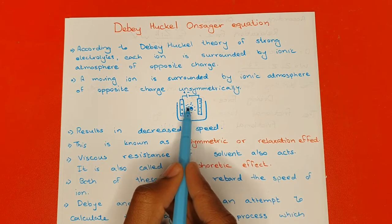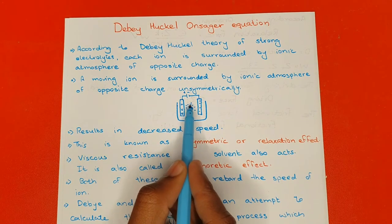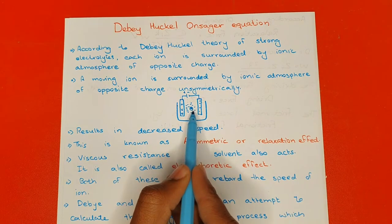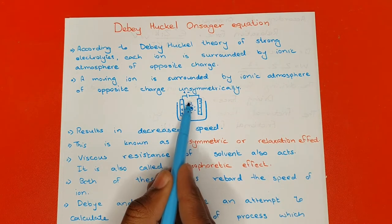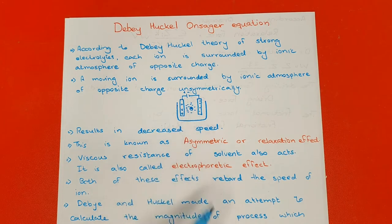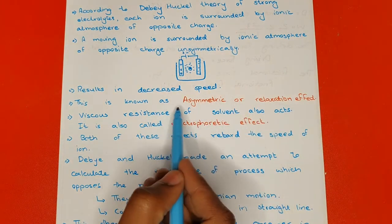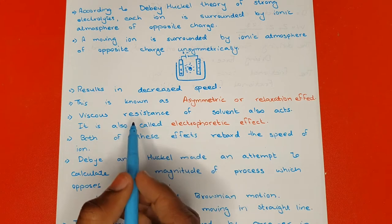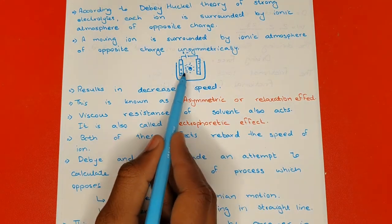For a positive charge moving towards the negative electrode, there will be more negative ions at the back side and fewer negative ions at the front side. This results in decreased speed and decreased conductance. This is known as the asymmetric or relaxation effect.